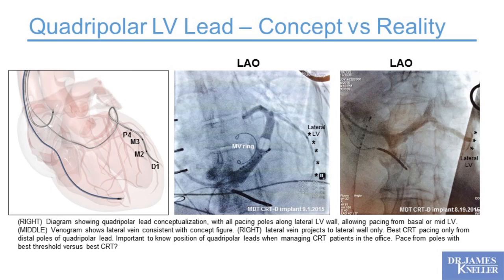If a patient with a CRT system is not responding — heart failure hasn't improved, ventricular function isn't improving on echo — we'll bring them to the EP lab and image them in LAO and RAO to see which poles are anatomically the best, and try to pace from those poles even if it requires a higher pacing threshold, because then you have a better chance of reversing the patient's heart failure status. I can't say enough about what you see in LAO versus RAO.